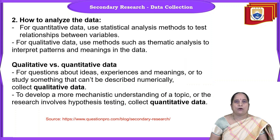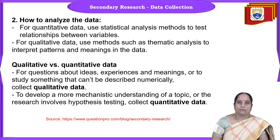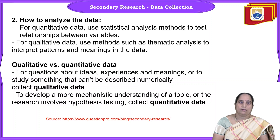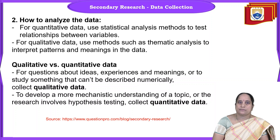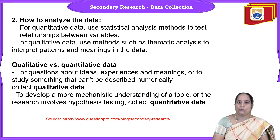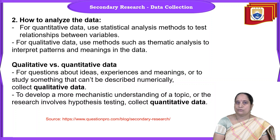Coming to the second step — how to analyze the data. First, you have to see what type of data collection method to use, then the researcher has to know how to analyze the data and what type of tools and techniques to apply. Under analysis of data, there will be two types: qualitative and quantitative. For quantitative data, use statistical analysis methods. If you want to test the relationship between two variables, we go with different types of statistical analysis — descriptive statistics, correlation, regression — all of which can be used to quantify the data.